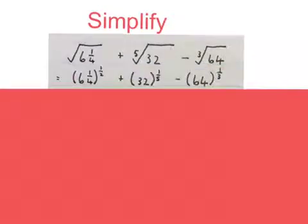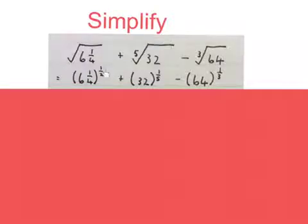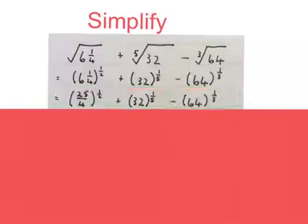What we do is we change this square root to a bracket with a half in the exponent, because there's a small 2 there. I'll make that a half. Because there's a small 5 there, I make that a fifth. Because there's a small 3 there for cube root, I put a little third in the exponent.